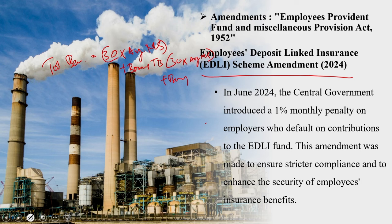The 2024 amendment to the EDLI scheme was introduced to enhance the financial security of employees in the private sector, particularly in light of rising living costs and the need for adequate insurance coverage. By increasing the benefit limits and extending coverage to more scenarios, the government aims to provide a safety net for employees and their families. This amendment represents a significant step towards improving the insurance benefits available to employees under EPFO, thereby enhancing overall worker welfare in India.